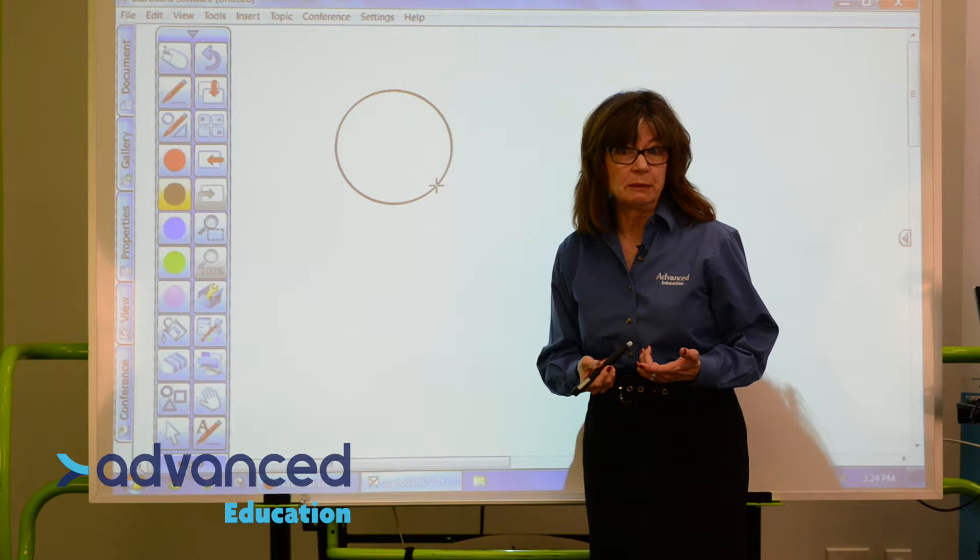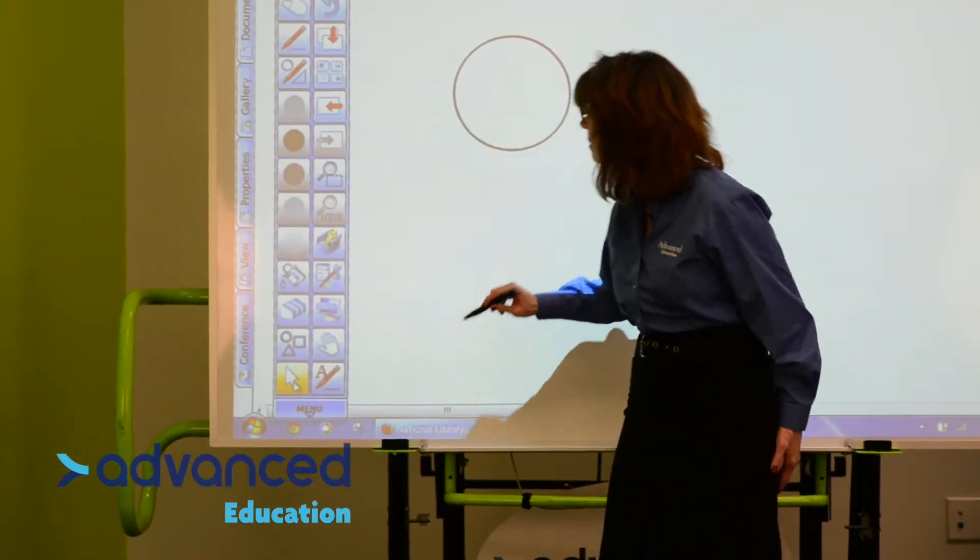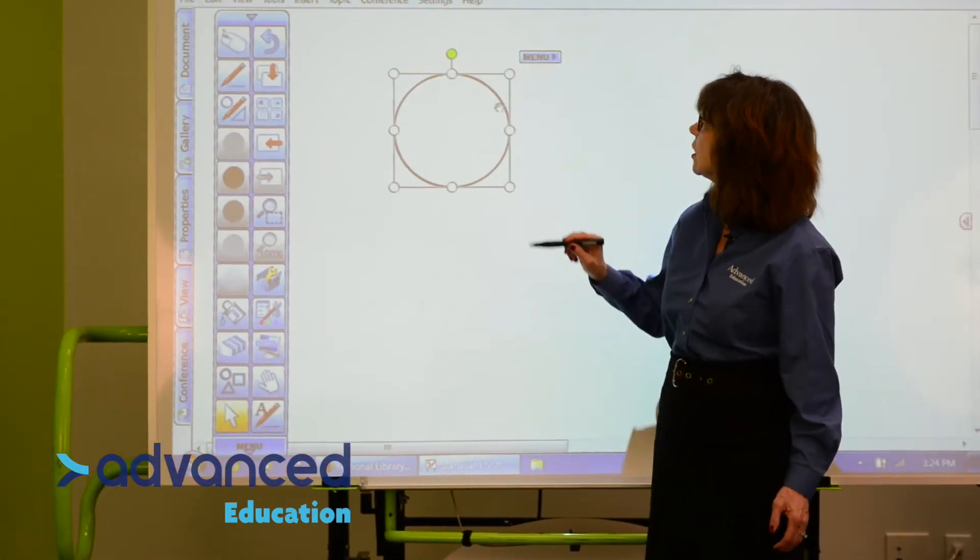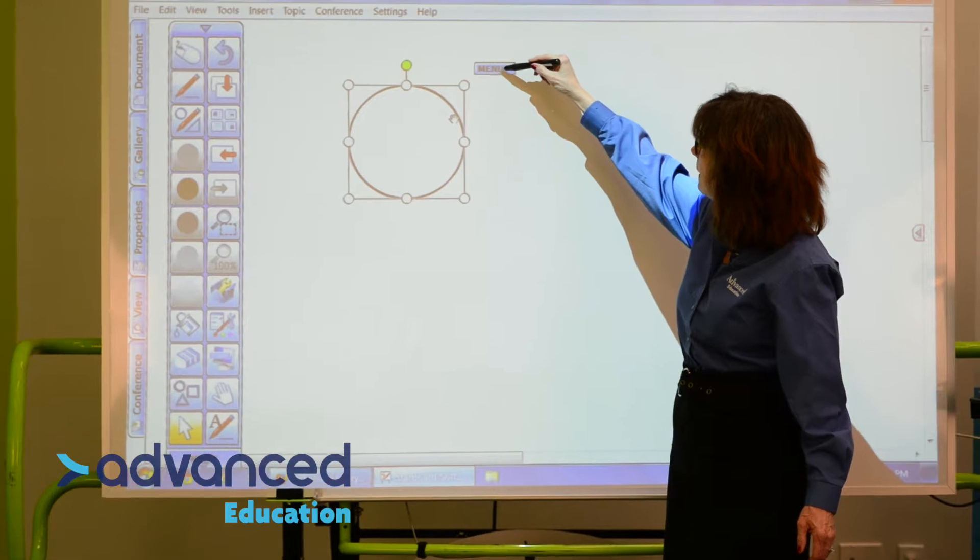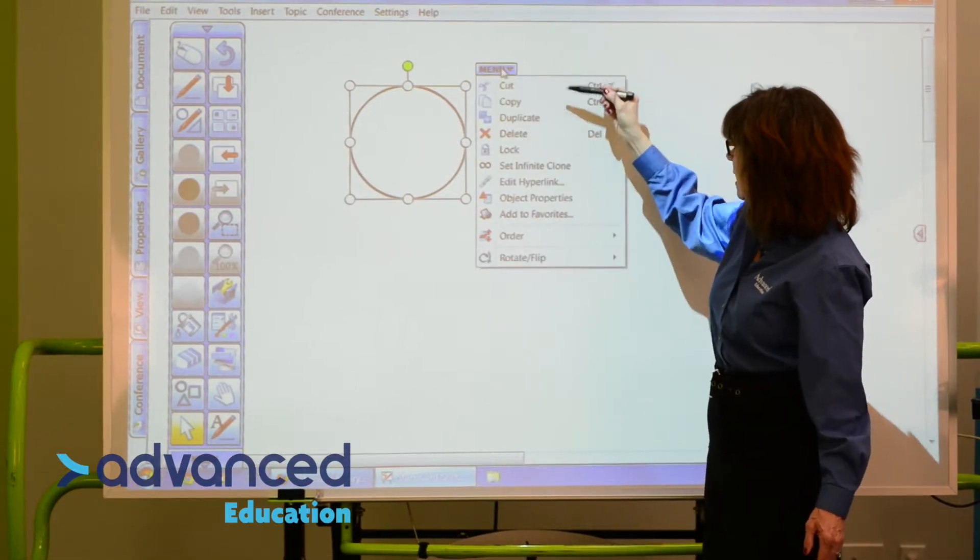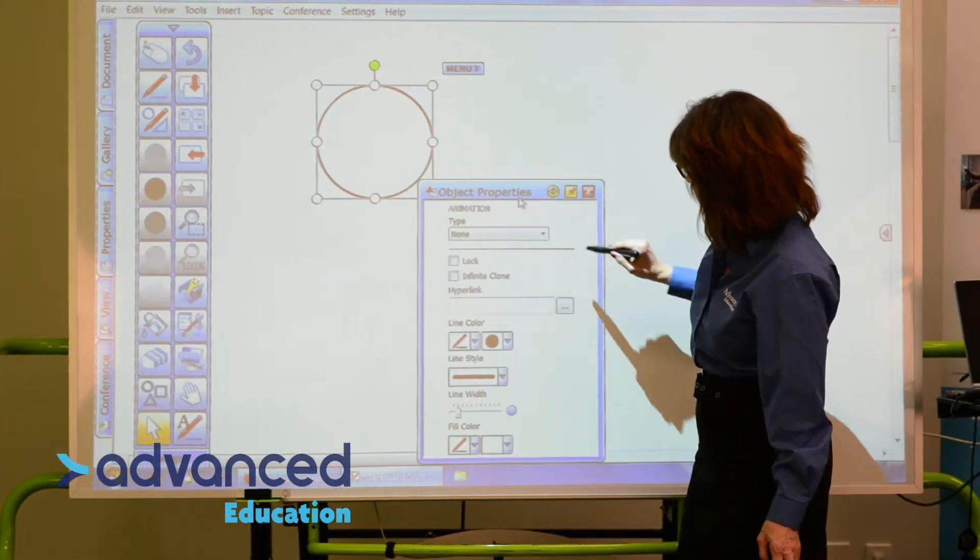Now, I think I'll make it a bit more colorful than that. In order to do that, I make sure that I'm on the Select tool, click on the circle, and you'll see a menu appear at the top right. I'm going to click on that menu, and down here you'll see Object Properties. This allows me to change all kinds of things.